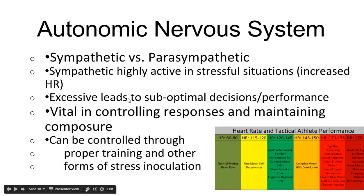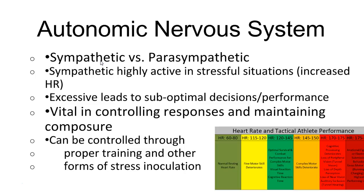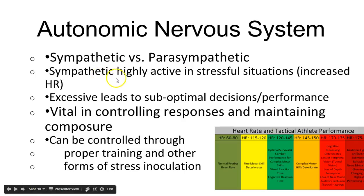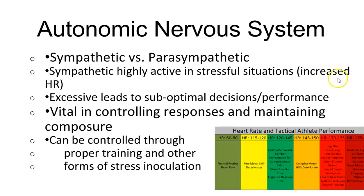With your autonomic nervous system, we're comparing the sympathetic versus parasympathetic. Sympathetic activates when you see a lion, you're in trouble, or a situation is very emotional. The parasympathetic is a relaxed, less stressful state. The sympathetic is highly active in stressful situations, resulting in an increased heart rate.